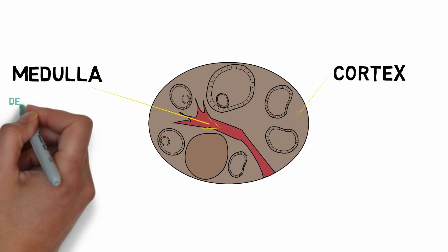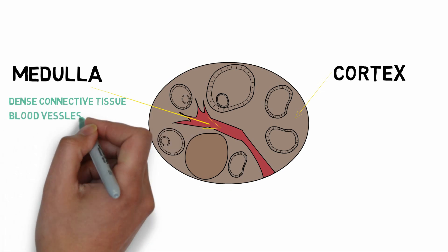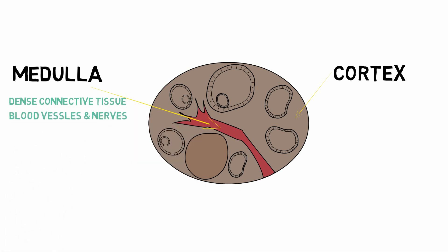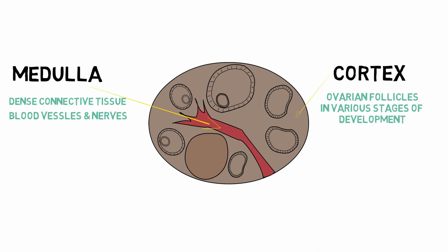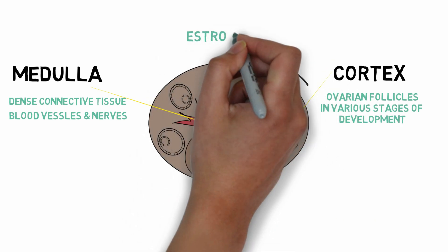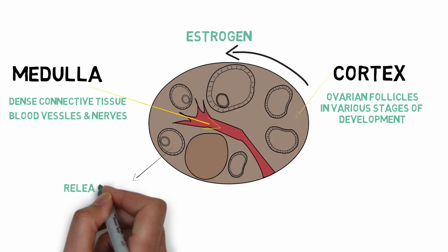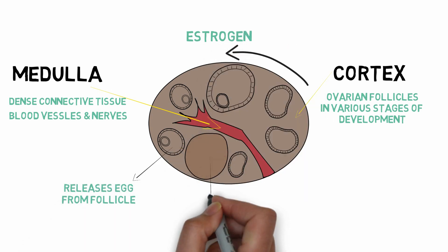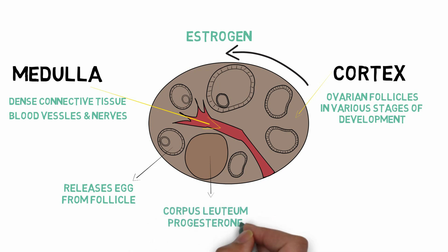The medulla consists of dense connective tissue and contains all the blood vessels, nerves, and lymphatics. The cortex consists of numerous ovarian follicles in various stages of development; these follicles secrete estrogen. When an ovarian follicle matures and releases a female egg, it becomes the corpus luteum, which secretes progesterone.